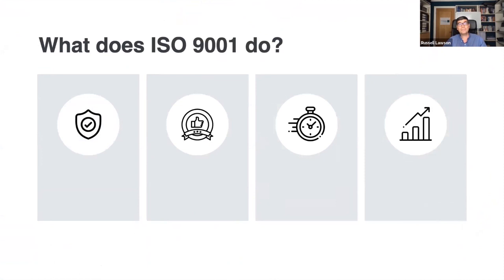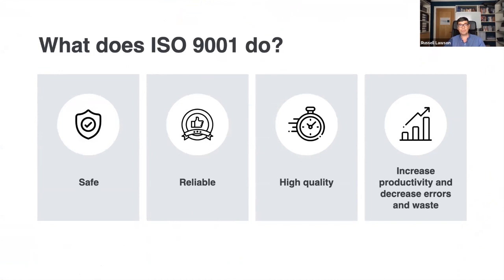We'll be looking at how we do this using ISO 9001. I implement quality management systems, environmental management systems, health and safety management systems, and information security management systems for clients. Today we're just focusing on quality management systems. The principle behind ISO 9001 is to help ensure that safe, reliable, and high quality products and services can be delivered by organizations, while increasing productivity and decreasing errors and waste — ensuring consumers always receive products and services to these internationally recognized standards.